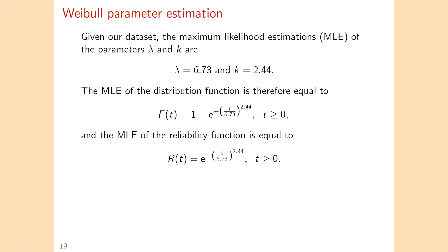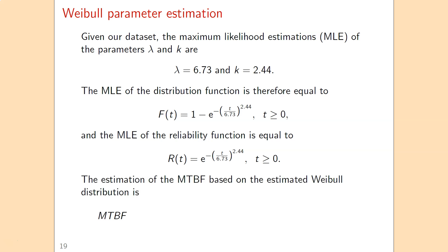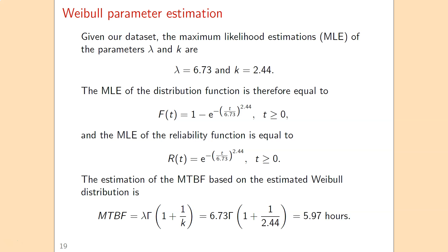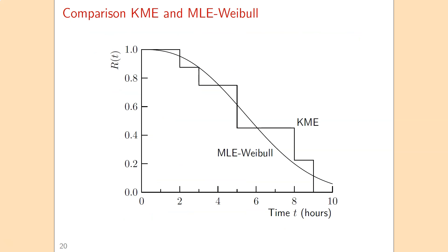Based on this estimated Weibull distribution, you can calculate the probability that a unit will not break down before reaching a certain age. The mean time between failures is lambda multiplied by the gamma function evaluated at 1 plus 1 over k, which gives 5.97 hours. This is quite close to the MTBF from the Kaplan-Meier estimation, indicating that this Weibull distribution is a good fit for the data.